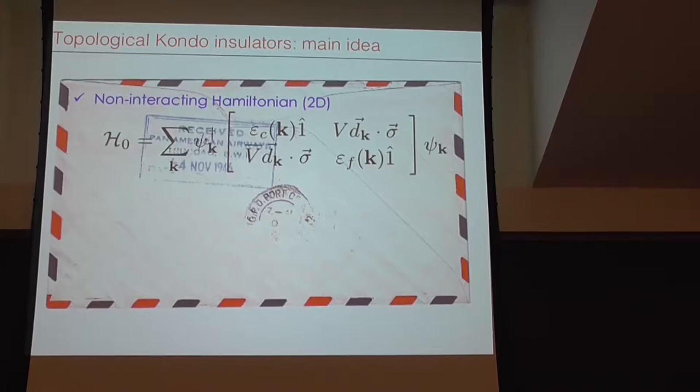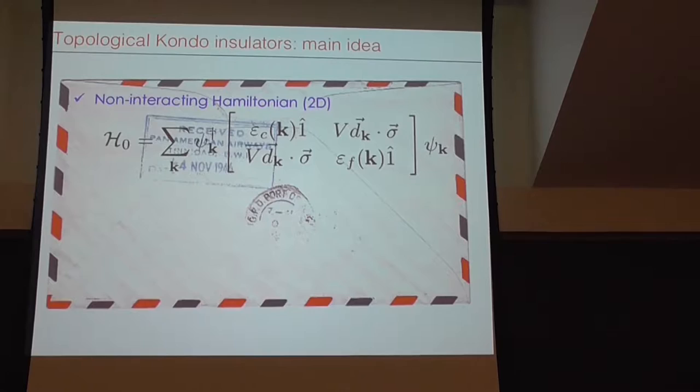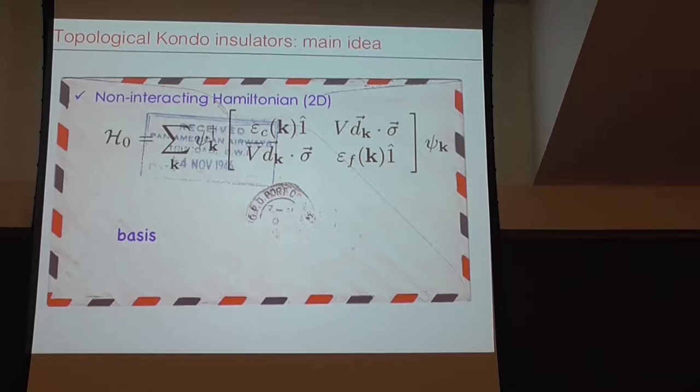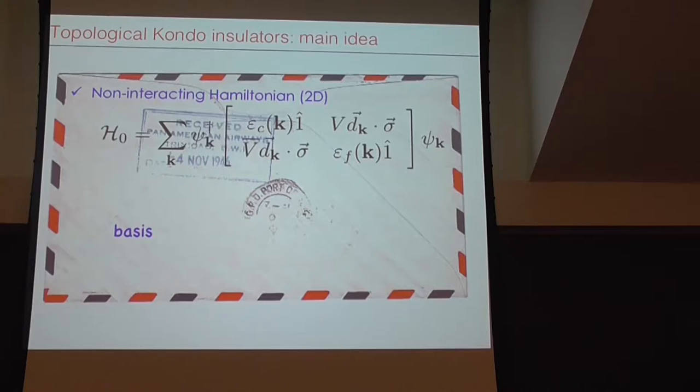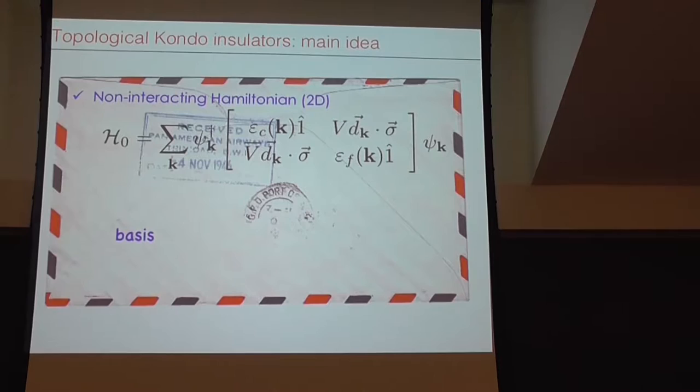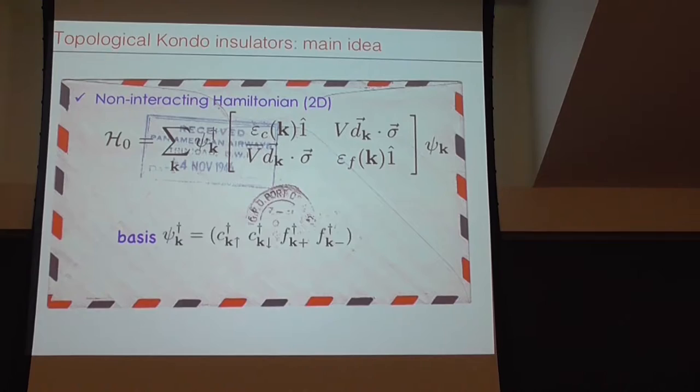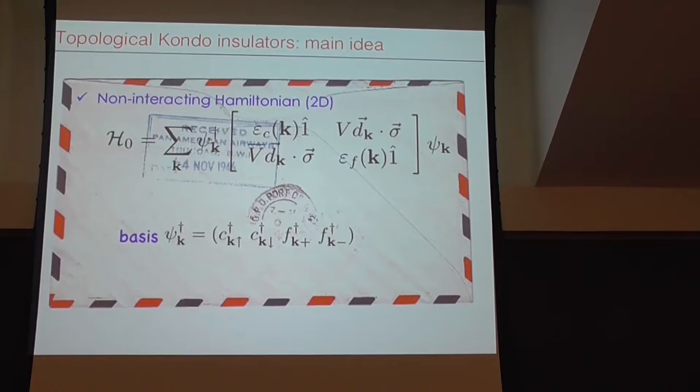For F shells or 4F shells here, you can estimate the size of the Coulomb repulsion to be of the order of two eV. The good thing is that the spin-orbit coupling which you typically need for the band inversion is also quite sizable compared to the D shell materials. So there's something to look for - strong spin-orbit coupling essentially guarantees the band inversion.